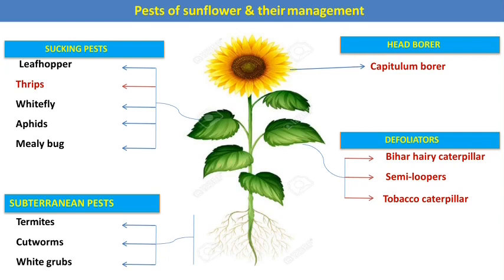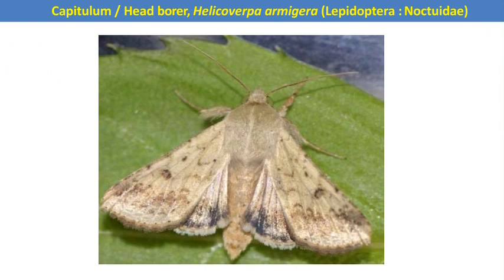This is the first minor oilseed crop, sunflower, and these are the different major and minor pests of sunflower. The first and most important pest of sunflower is the capitulum or head borer. The scientific name is Helicoverpa armigera, and it is one of the major polyphagous pests. In the case of sunflower, it is called the capitulum or head borer.